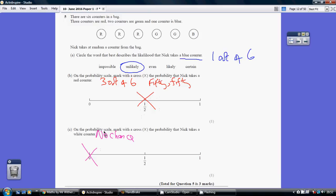Now, part C. Probability that Nick takes a white counter. Well, there are no white counters there. It's just impossible. You can't pick a counter from there and get a white one. So there's zero chance of that happening.